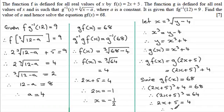So by this method, as expected, we get the same answer: x = -½. Whatever method you choose, both lead to x equals negative one half.